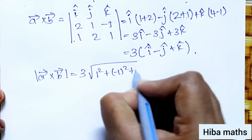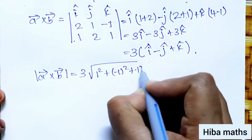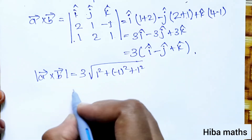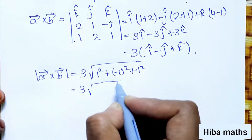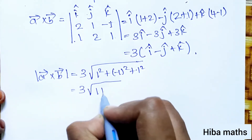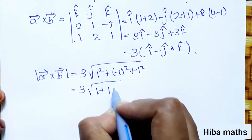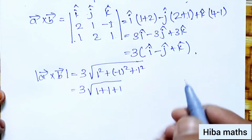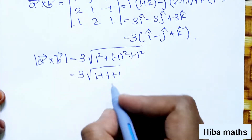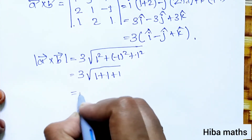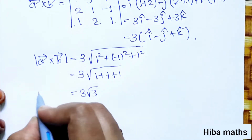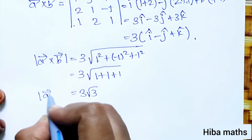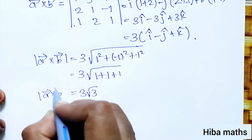Now computing the modulus of a cross b: we have 3 squared plus 1 squared, that is equal to root of 1 plus 1 plus 1, giving us 3 root 3. So the modulus of a cross b vector is 3 root 3.